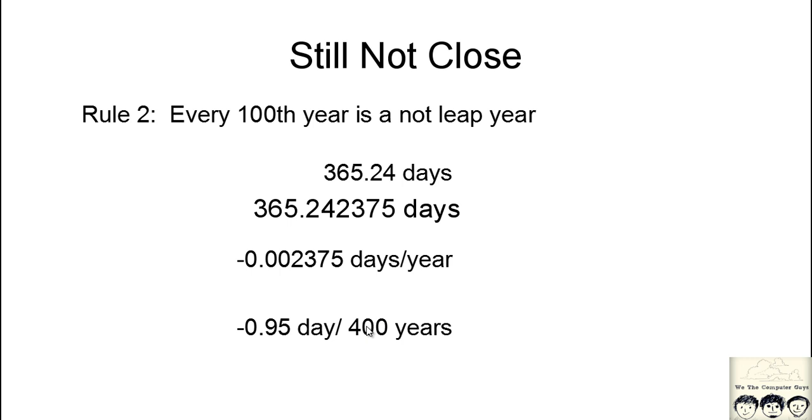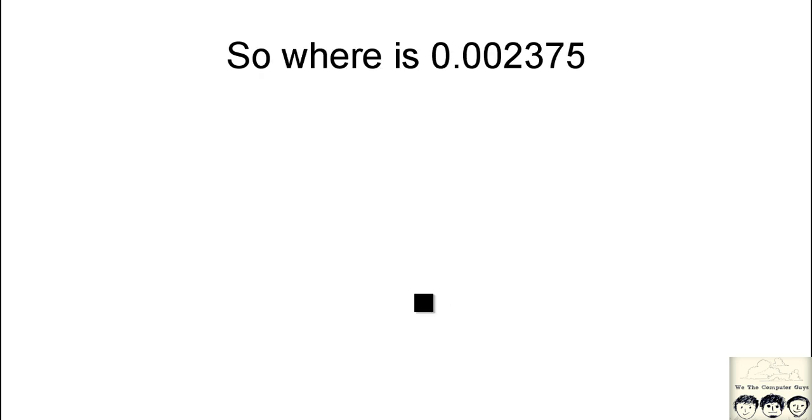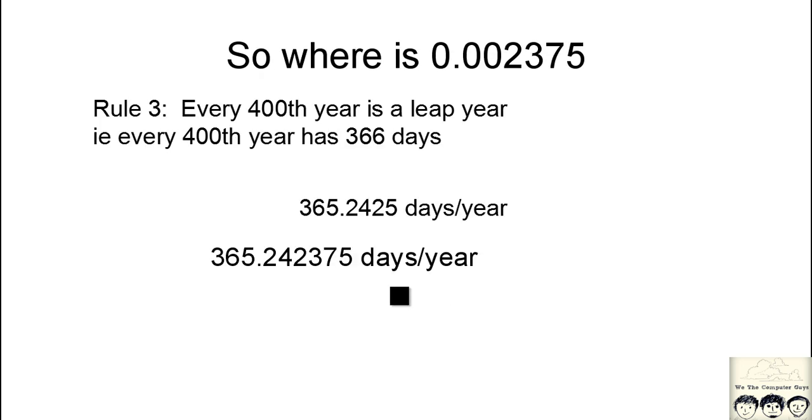So they introduced a new rule saying that every 400th year is a leap year. How close did we reach by doing that? We reached as close as 365.2425 days per year. The accurate figure is 365.242375 days per year. You can see that we are very close now.